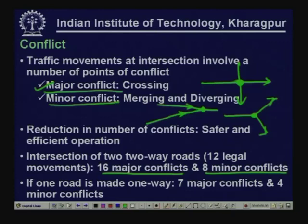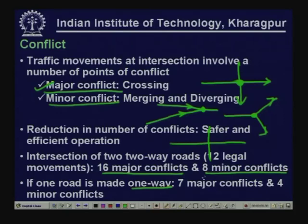The job of a traffic engineer is to reduce conflicts to make operation safer and efficient. This can be done by making two-way roads one-way. If one road is made one-way, the number of conflicts comes down from twenty-four to eleven - seven major and four minor. Making roads one-way is a tool for improving efficiency and safety of traffic operations at intersections.